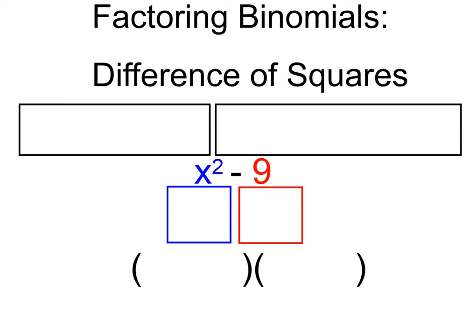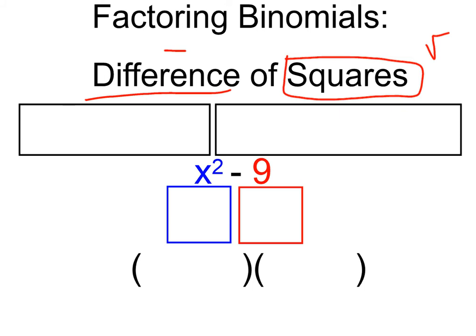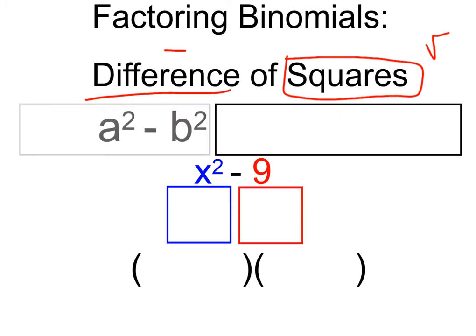The first thing we want to talk about is the idea of it being a difference of squares. A difference means a subtraction sign — if you're looking for the difference of two numbers, you're subtracting them. Squares are those perfect squares that I can take the square root of and get a nice integer number. So what it should look like is some number squared minus another number squared.